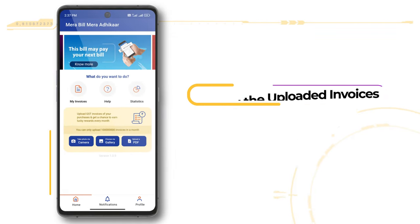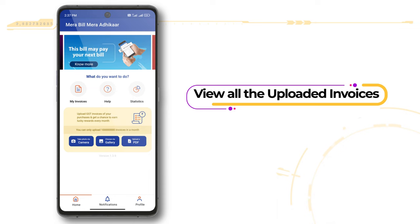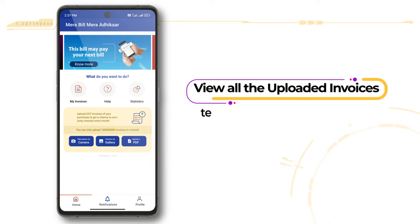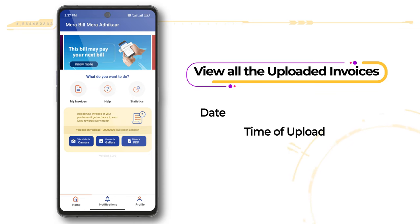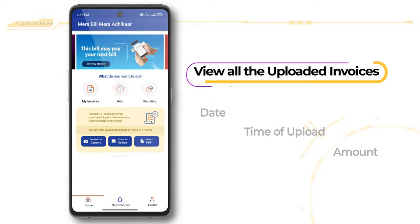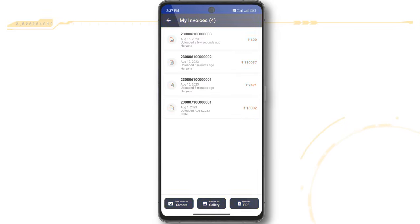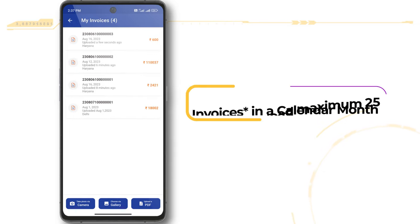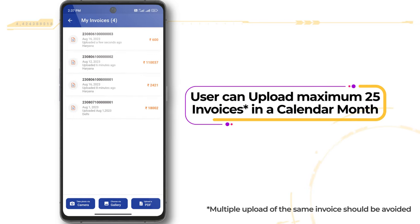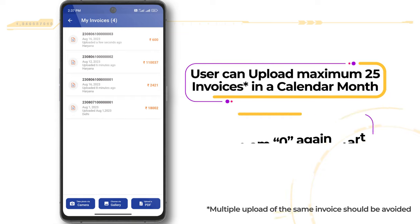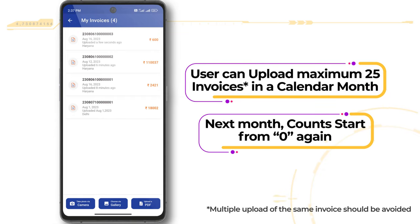To view all uploaded invoices with their respective details such as date, time of upload, and amount, visit the homepage and tap the My Invoices button. Please note that a user can upload a maximum of 25 invoices in a calendar month; the app will not accept any further invoices during that month. The next month, the count starts from zero again.